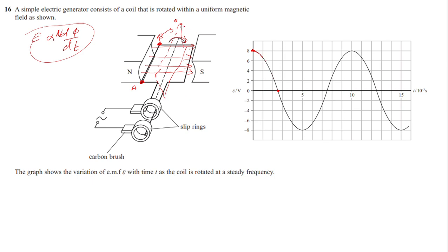As the coil moves from vertical back to horizontal, conductor AB again cuts field lines in the opposite direction, so EMF builds from zero back to maximum but with opposite sign. This is one full half-cycle. That explains the variation of EMF from maximum to minimum and back.